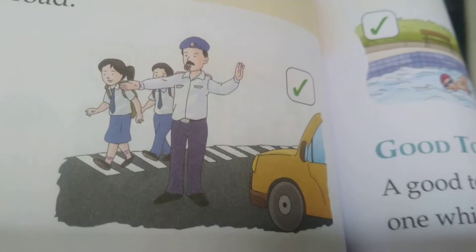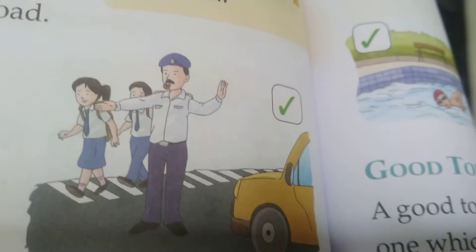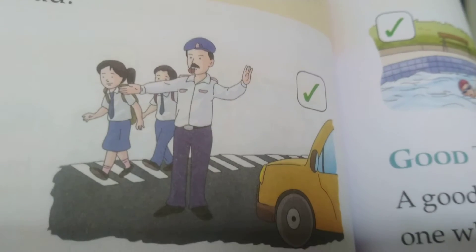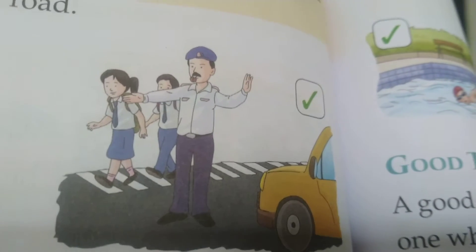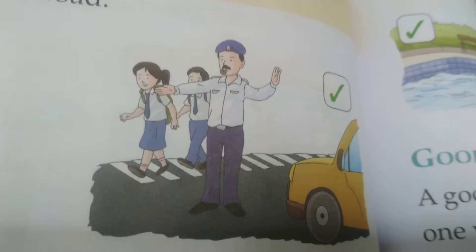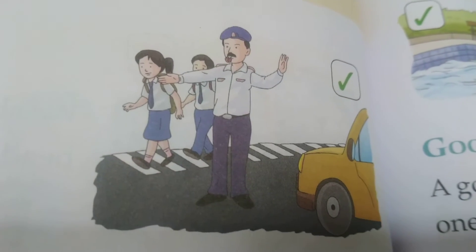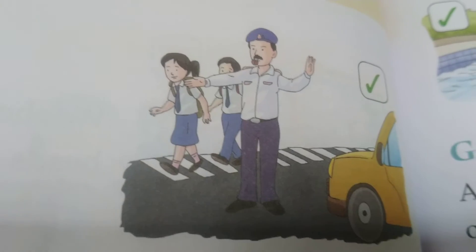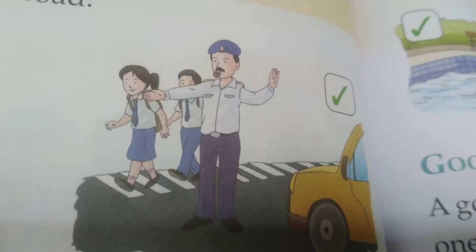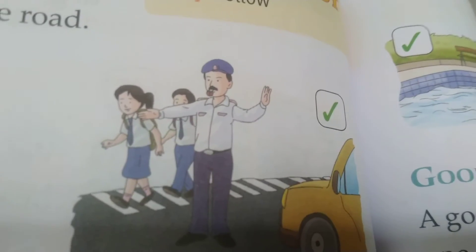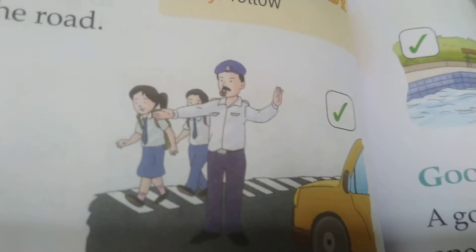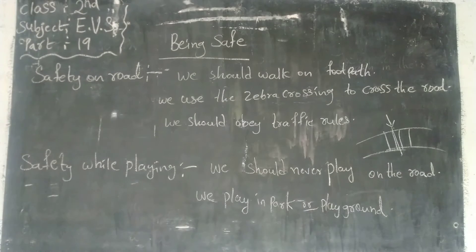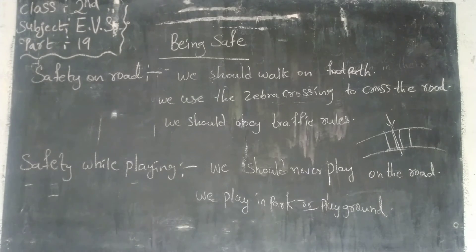After the children cross the road, the vehicles will move. We should always obey the traffic rules, and then accidents will not occur. When we do not obey the traffic rules, accidents will occur.